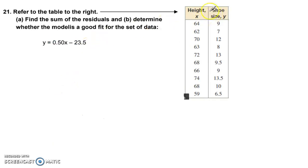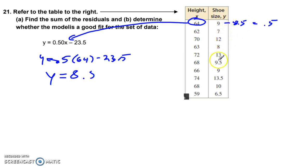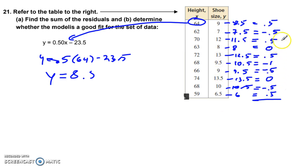Here we want to find all the residuals. Alright. So to do that, we will plug in this value for x right here. Okay. So y is equal to 0.5 times 0.5 times 64 minus 23.5. Okay. And that gives me 8.5. So I'm going to have 8.5 here. I'm going to subtract that. And that gives me a residual of 0.5. Same procedure for the rest of these. Boom. There you have it.